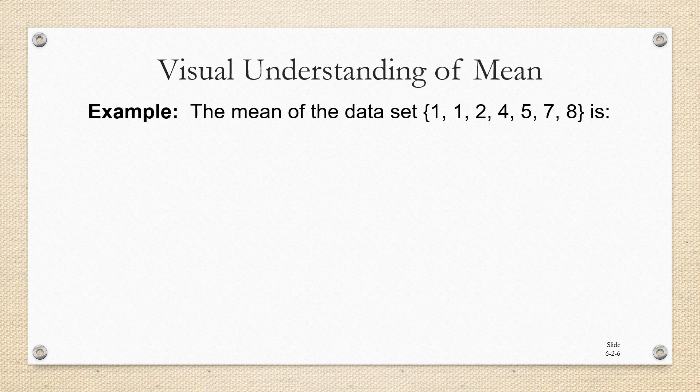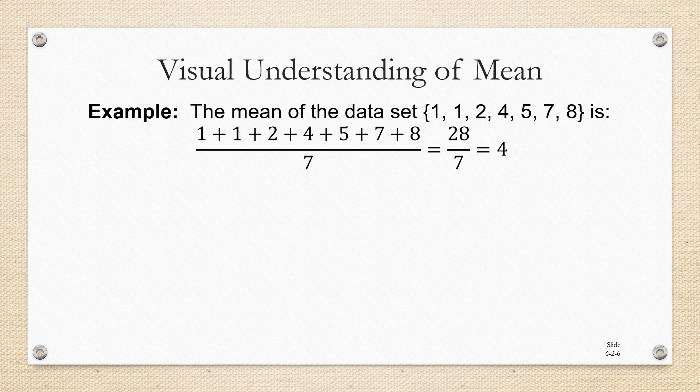The mean of the data set 1, 1, 2, 4, 5, 7, and 8 is going to be the sum of those values, which adds up to 28, divided by 7, the number of values in the set. 28 divided by 7 is 4. You can tell looking at the data set that 4 is roughly in the middle of the numbers. So that goes with the idea of central tendency.